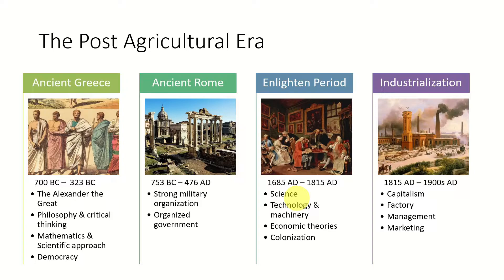Due to all those factors, western European countries dominated the world and managed to colonize both North and South America, the entire African region, and a good part of Asia and Australia. At the end of the Enlightenment period, humans stepped into the industrialization revolution, around 1815 AD to 1900 AD. That was the time period where concepts like capitalism, factory management, and marketing came into the picture.